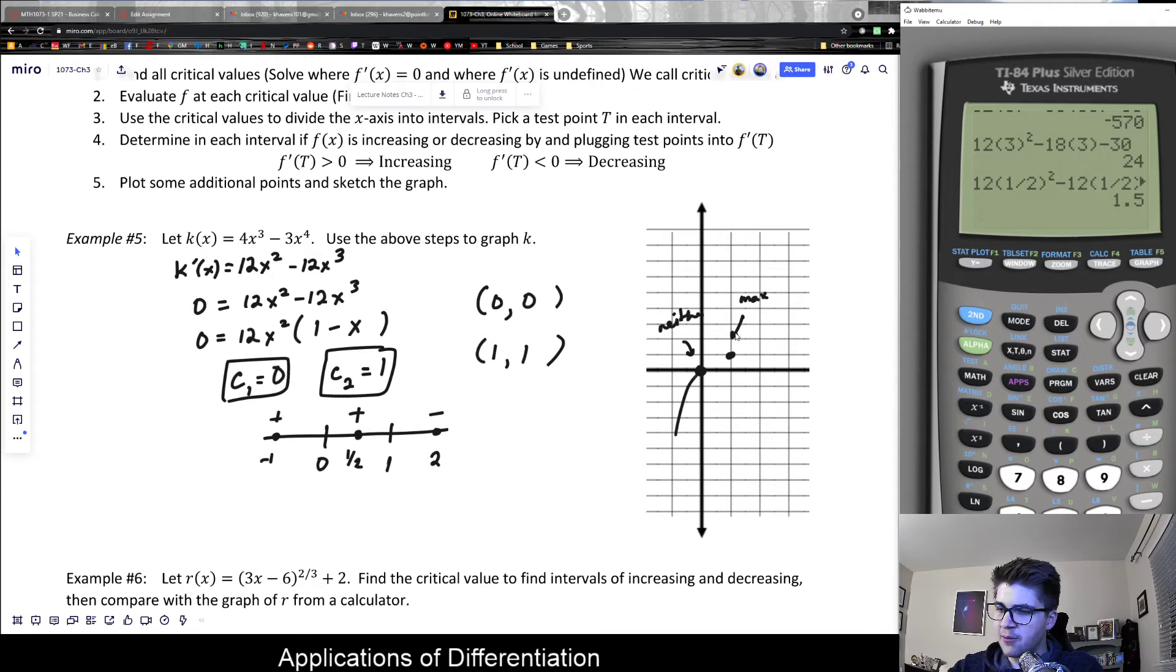I should be able to know this is a maximum and this is neither. The curve will look something like this: increasing, increasing, decreasing. If I want to actually graph it more accurately, I need to graph the original points to begin with, but it gives me an idea of what the shape will look like without going into the actual values.